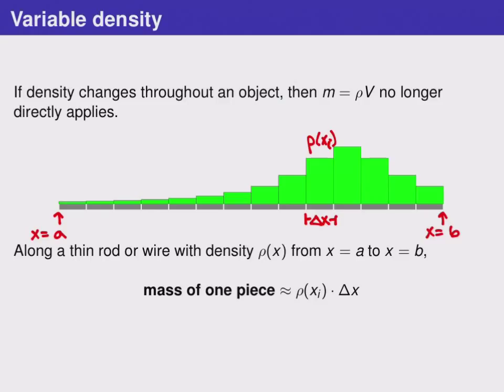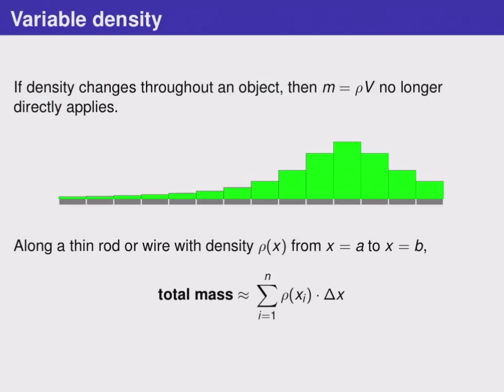So to find the mass of one piece, we simply multiply the density, that's rho of xi, times the volume, which we're going to approximate by delta x in this case. To figure out the total mass, we will add up the density times the volume for all of these pieces.